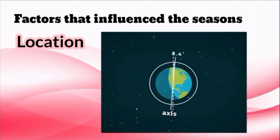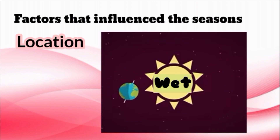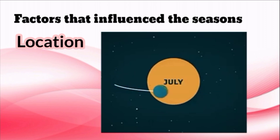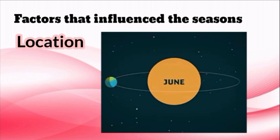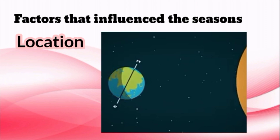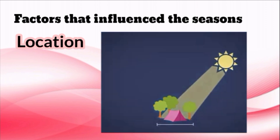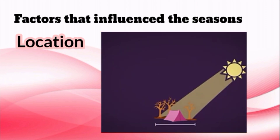Earth's tilted axis at an angle of 23.5 degrees is another factor that causes the seasons. Throughout the year, different parts of the Earth receive the sun's most direct rays. Sunlight influences the seasons, particularly the sun's position and Earth's surface that reflects the light.